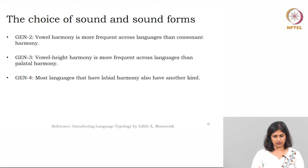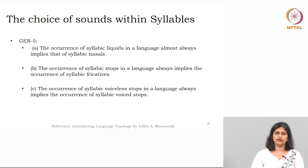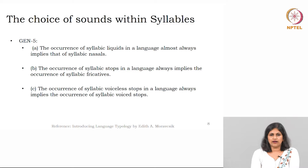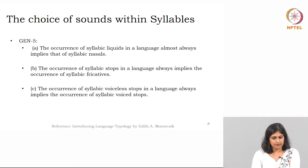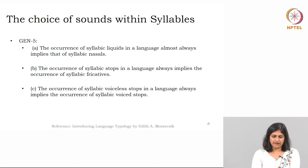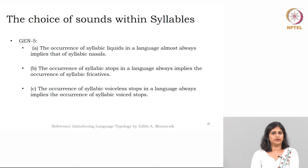With these generalizations, we move to the fifth generalization within syllables. There are three parts. The first one: the occurrence of syllabic liquids in a language almost always implies that of syllabic nasals. The second: the occurrence of syllabic stops in a language always implies the occurrence of syllabic fricatives. The third: the occurrence of syllabic voiceless stops in a language always implies the occurrence of syllabic voiced stops. These are implicational universals — if X is there, then Y will also be there.